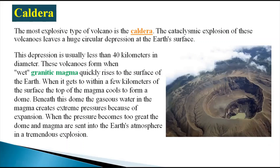Next are the caldera volcanoes, which are the most explosive type. The cataclysmic explosion of these volcanoes leaves a huge circular depression at the earth's surface — a bowl-shaped structure. This depression is less than 40 kilometers in diameter.